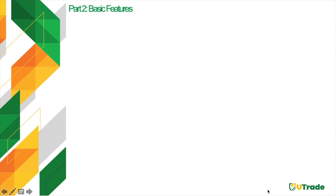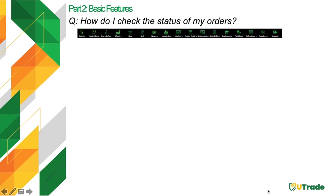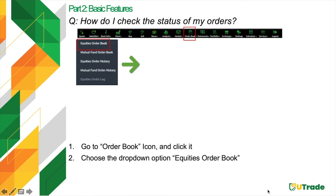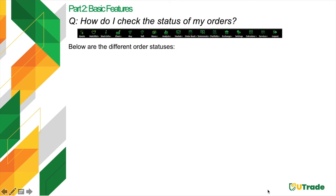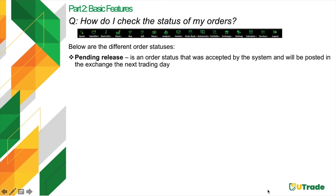To check the status of your submitted orders, go to the Order Book icon, click it, then choose Equities Order Book. Order statuses include: Pending Release — accepted by the system and will be posted in the exchange the next trading day. Our platform accepts orders even when the market is closed — orders submitted during off-market hours will be submitted as soon as the local market opens. Queued — successfully posted in the local exchange and awaiting a match.